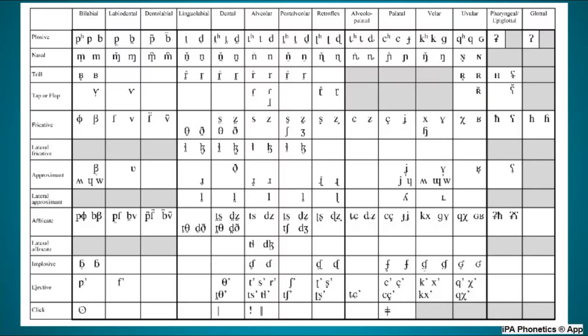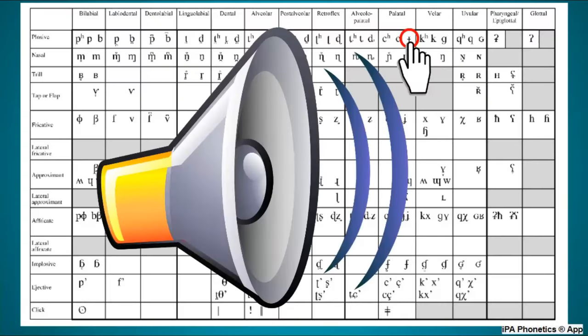And if there's an IPA symbol I don't know, I go to the IPA Phonetics app, find that symbol, and click on it. It'll play both the audio of that sound and a video showing a mouth saying it.